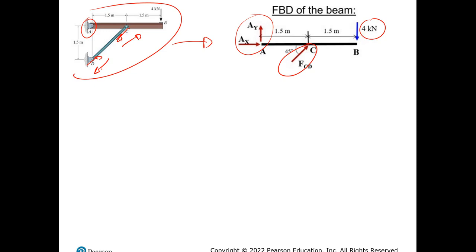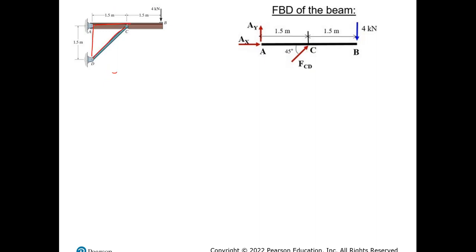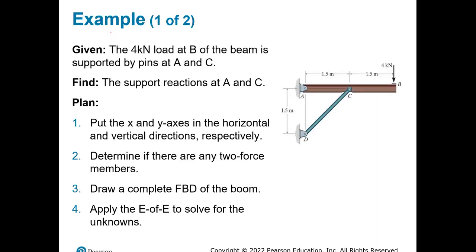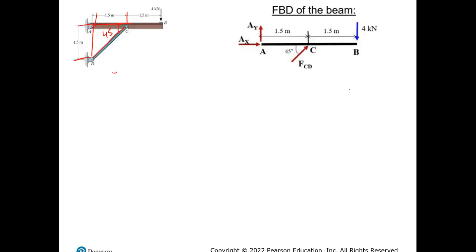Moving into this exercise, we have 45 degrees because you can form a triangle here, and when this side equals that side in distance, you get 45 degrees. The real question is where to take moments first to find the unknowns. At point B, both AY and FCD-Y would cause moment and I don't know either one. So doing moment at B doesn't make sense. But if I do moment at C, the only unknown causing moment is AY — or at A, the only one is FCD-Y.